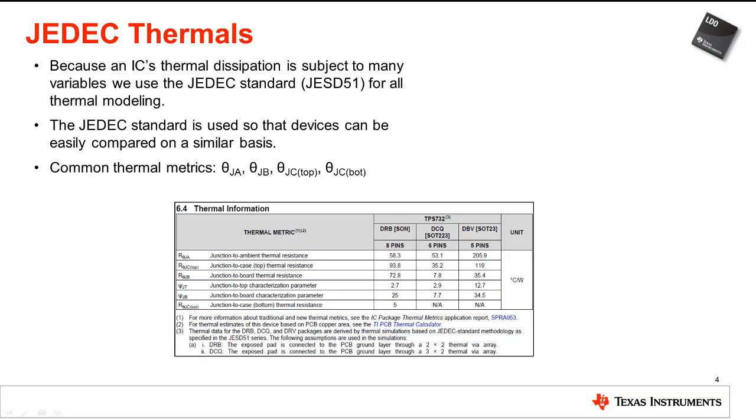At Texas Instruments, the thermal numbers specified in the datasheet adhere to the JESD51 standard. One advantage of doing thermal models to this standard is that devices can easily be compared to other devices that are modeled using this standard. Parts that were not modeled using this standard will not be able to be directly compared to the TI parts.